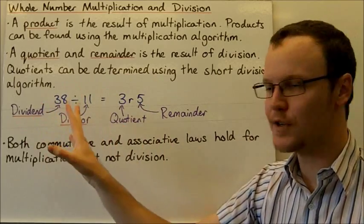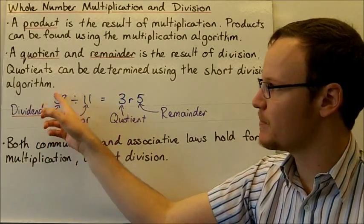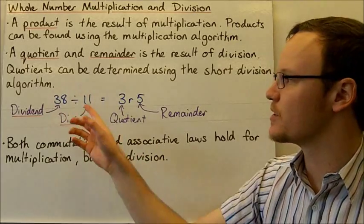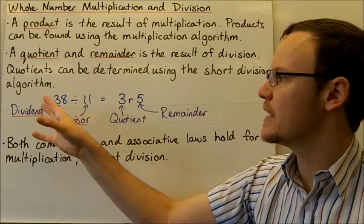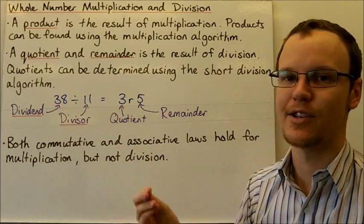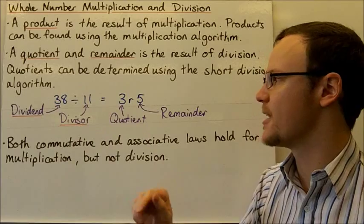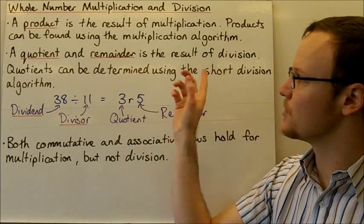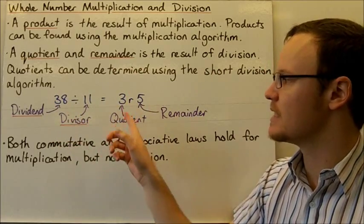For any division, there are a few terms we need to know. The larger number that we are dividing the small number into is called the dividend. The other number that we are actually dividing into the dividend is called the divisor. The result of that division is a quotient.